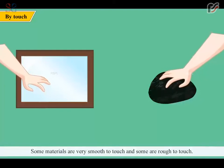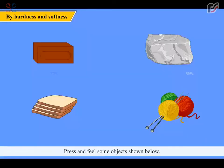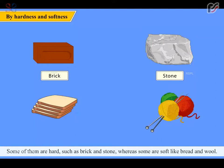Some materials are very smooth to touch and some are rough to touch. Press and feel some objects shown below. Some of them are hard such as brick and stone whereas some are soft like bread and wool.